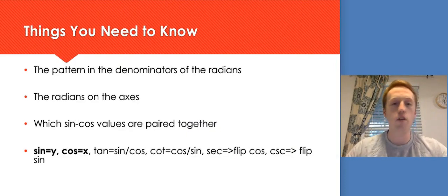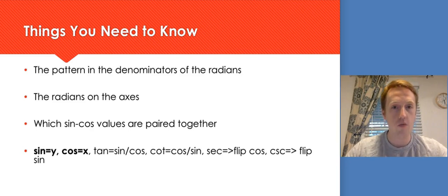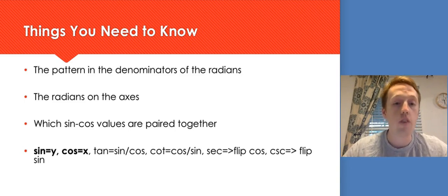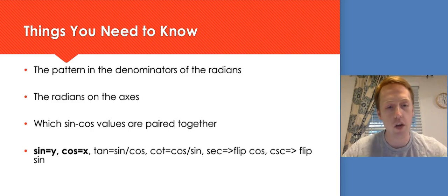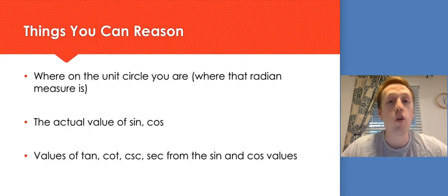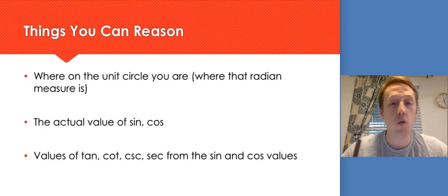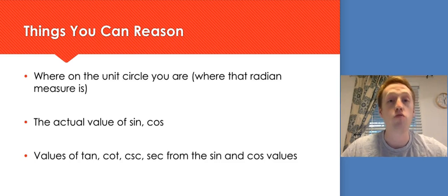Things you need to know: you have to know the pattern in the denominators of the radians. You have to know the radians on the axes — 0, 2π, π/2, 3π/2, and π. You have to know which sine and cosine values are paired together. You have to know that sine is y, cosine is x, and then tangent, cotangent, secant, and cosecant all come from that. Things you'll reason out afterwards: where on the unit circle you are, the actual values of sine and cosine, and then the other four trig functions from sine and cosine.